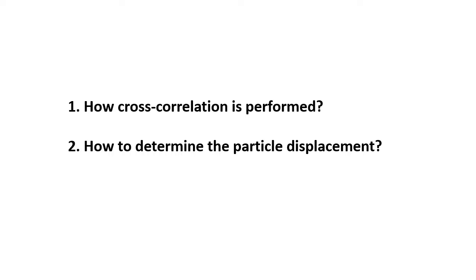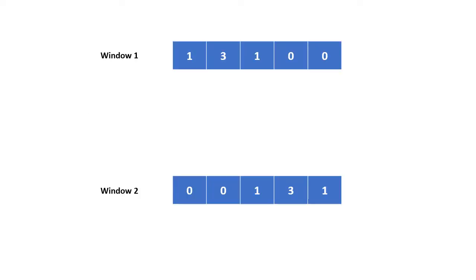I want to pass my experience and expand it in a straightforward and illustrative way to help you understand much quicker. We start with a 1D window — usually we have 2D windows from images, but let's assume we are doing 1D PIV. So this is window 1, and we have five 1D pixels. The particle recorded spans over three pixels, and the center of the particle is marked here.